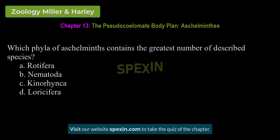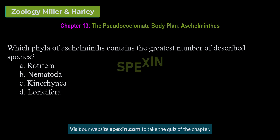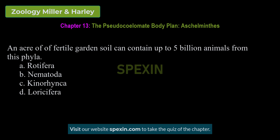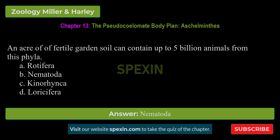Which phyla of aschelminthes contains the greatest number of described species? A. Rotifera. B. Nematoda. C. Kinorhyncha. D. Loricifera. Correct answer: Nematoda. An acre of fertile garden soil can contain up to 5 billion animals from this phylum. A. Rotifera. B. Nematoda. C. Kinorhyncha. D. Loricifera. Correct answer: Nematoda.